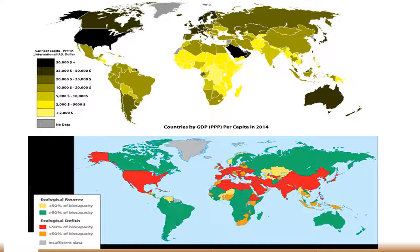Now, in comparing the two figures, it's interesting to look at GDP in relation to whether or not countries are considered to be in a surplus or a deficit. The United States has a high GDP and we are considered to be in an ecological deficit — again, because we're a highly consumptive society. The countries in the GDP category where China falls, between $10,000 to $20,000 GDP, are also in the ecological deficit scenario.